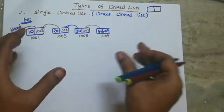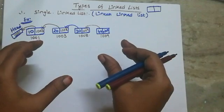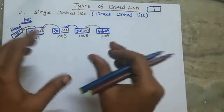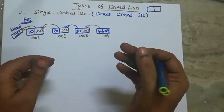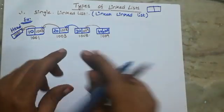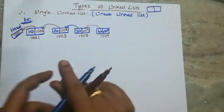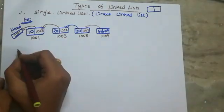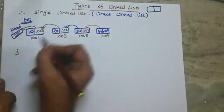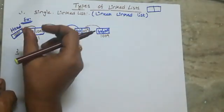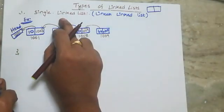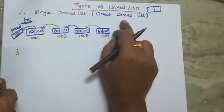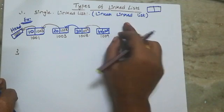Every linked list's first node is the head pointer. We will do insertions and deletions in another video. Here: one node, two parts, next node address store. Single linked list, or linear linked list.